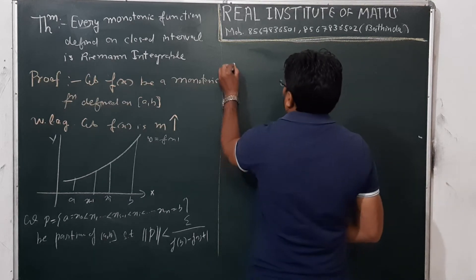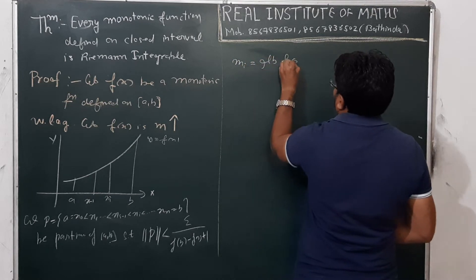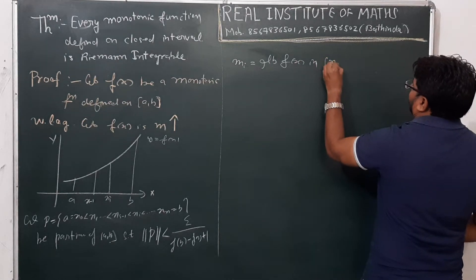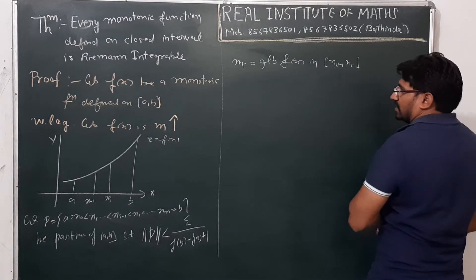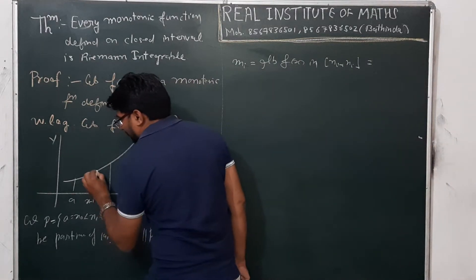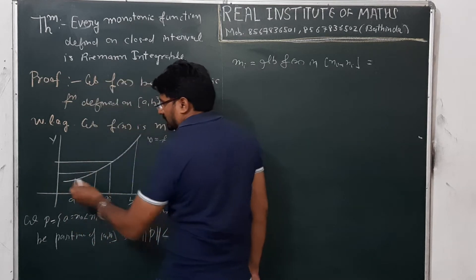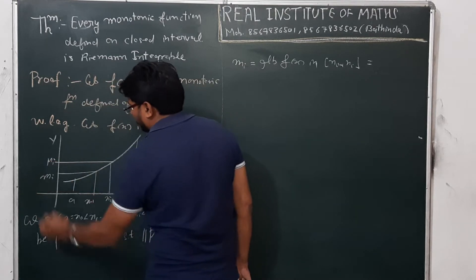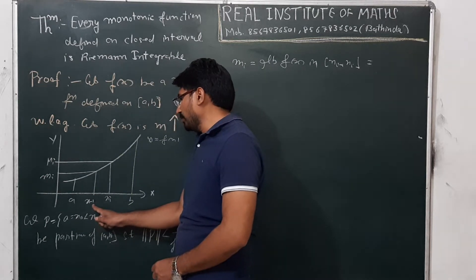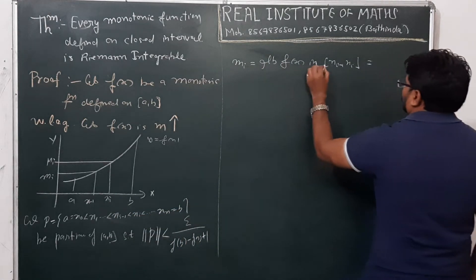Now, what is small m_i? Small m_i is the greatest lower bound of f(x) within the interval [x_{i-1}, x_i]. And capital M_i is the least upper bound. So small m_i corresponds to the lower value and capital M_i to the upper value on the subinterval.